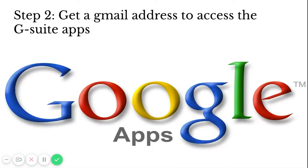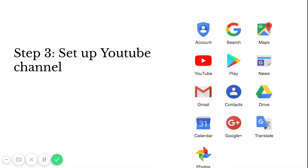Step two: get a Gmail address to access the G Suite apps and set up your YouTube channel. You can also use Google Meet if you have access to that. You can record the session as a YouTube Live or as a Google Meet — Google Meet is maybe a more user-friendly version, and it will save directly to your Drive.